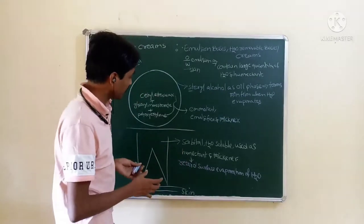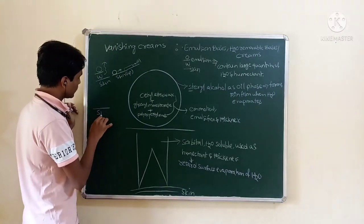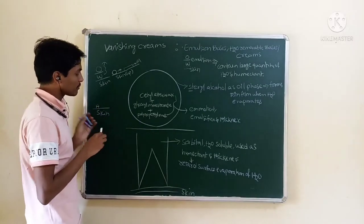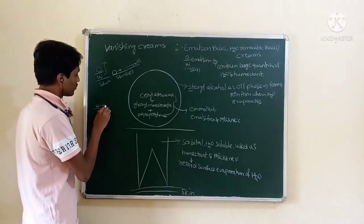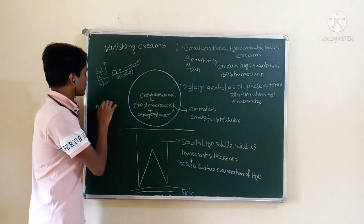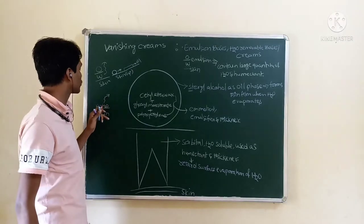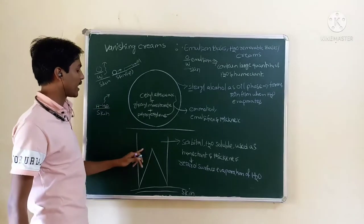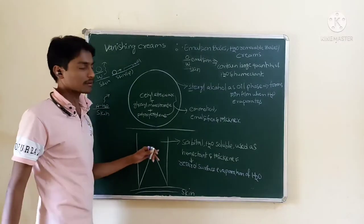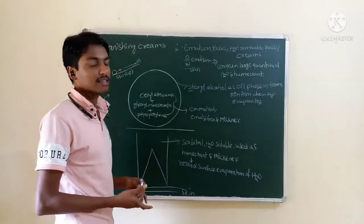Skin is there. Humectant is there. Humectant will form hydrogen bond with water. Due to the formation of hydrogen bond, whatever water is there, it is not evaporated due to the presence of humectant in the aqua system. This is the mechanism of humectant. It retards the surface evaporation of water and acts as a thickening agent.